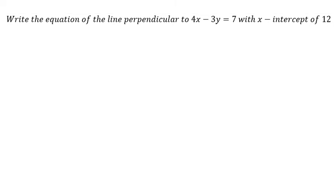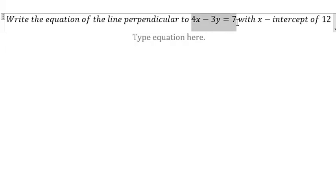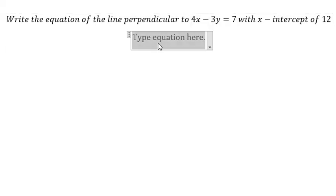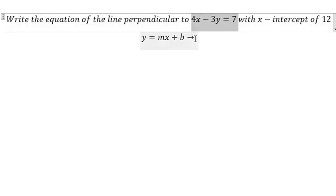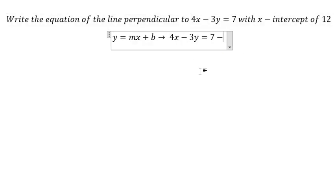First, we need to arrange this into y = mx + b. We need to put 4x to the right, and we have -4x.